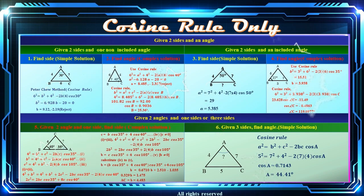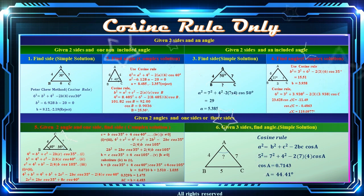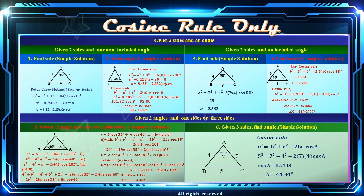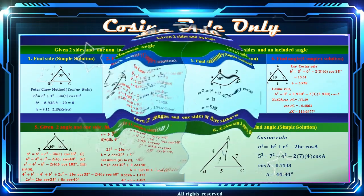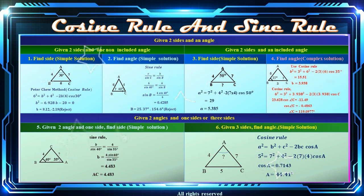However, the cosine rule can only simply solve three types of triangle problems. The other three types cannot be solved simply by the cosine rule — the cosine rule needs to be used multiple times, which is complicated. Therefore, we need to learn another rule to solve them simply. That rule is the sine rule. As shown in the figure, the sine rule can solve two types of triangle problems: type 2 and type 5. This is the reason why we need to learn the sine rule.